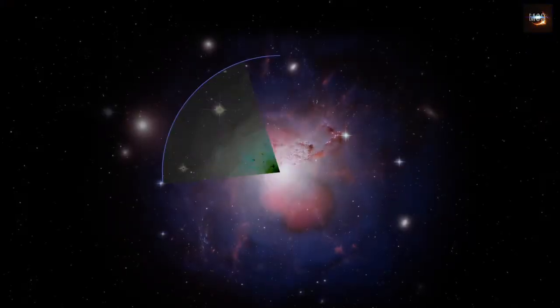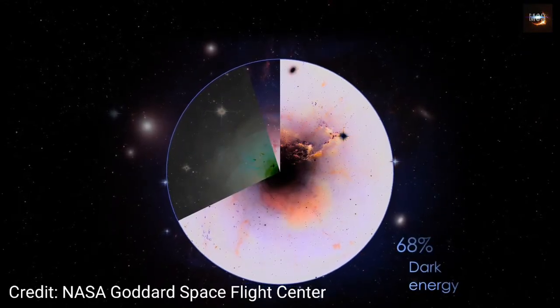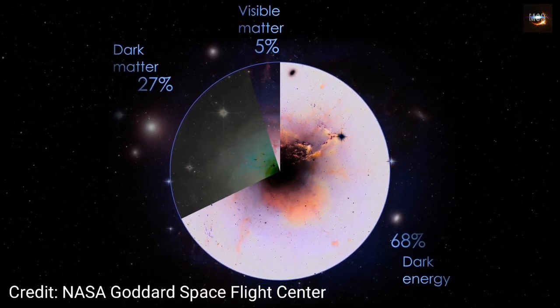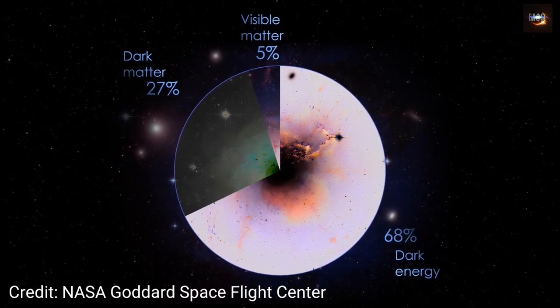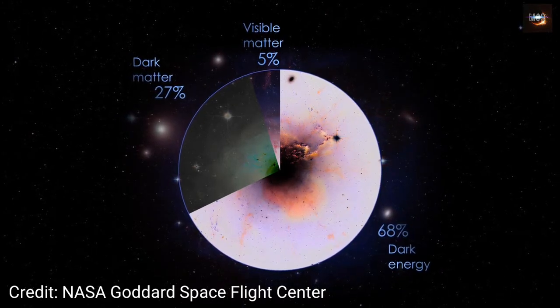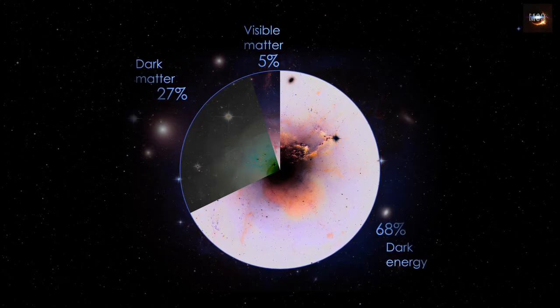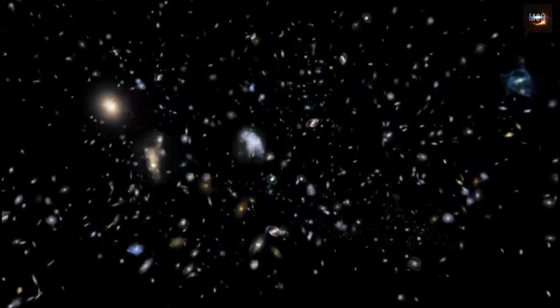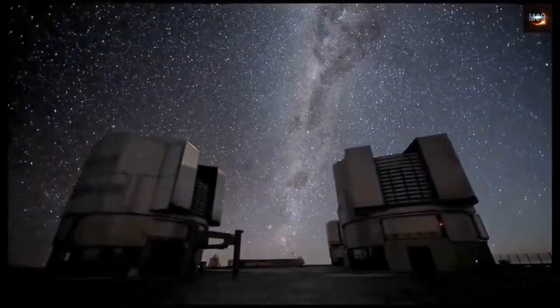Looking back into matter in the universe, the universe consists of 5% normal matter, 27% dark matter and 68% dark energy. What is this dark energy? Why is it in so large proportions? Dark energy is the factor behind the expansion of the universe.